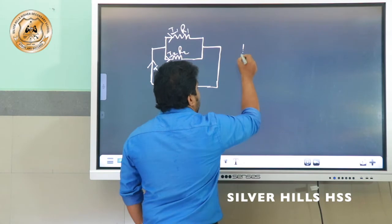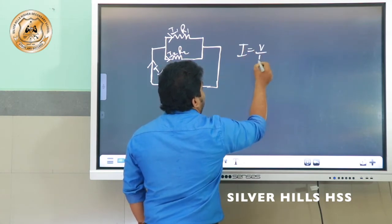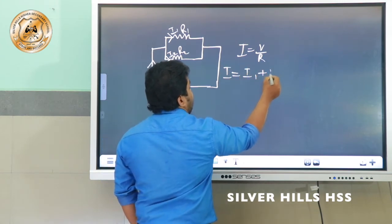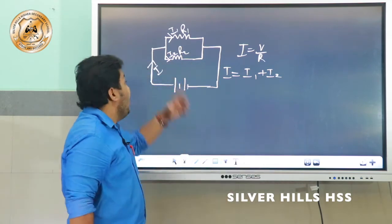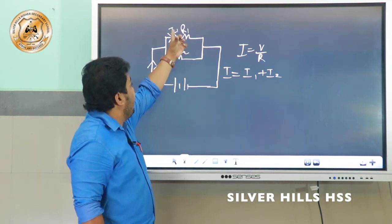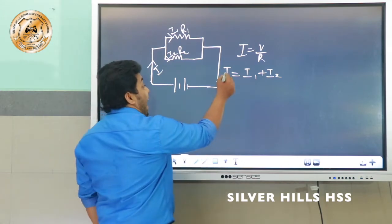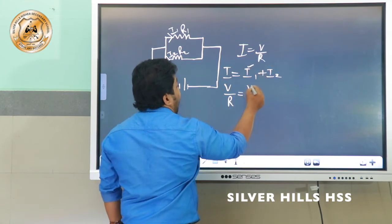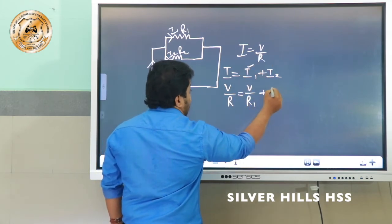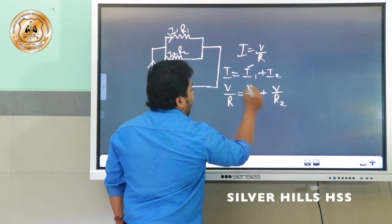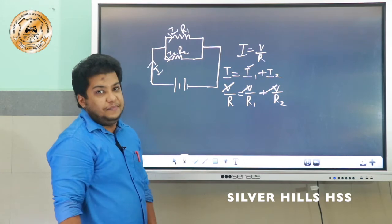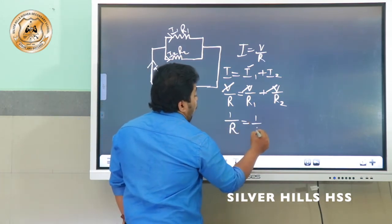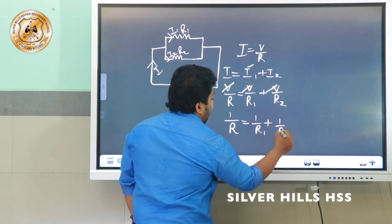According to Ohm's law, I is equal to V by R. The total I is equal to I1 plus I2. Since I is V/R, I1 is V/R1 and I2 is V/R2. The V terms cancel, and we obtain 1 by R is equal to 1 by R1 plus 1 by R2.